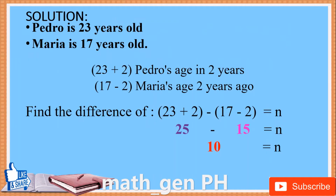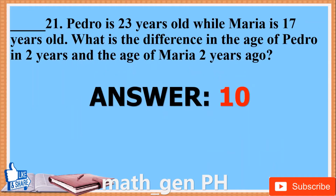Solution. Pedro is 23 years old and Maria is 17 years old. Pedro's age in 2 years: 23 plus 2. Maria's age 2 years ago: 17 minus 2. Find the difference: (23 plus 2) minus (17 minus 2) equals N. 25 minus 15 equals 10. Answer: 10.